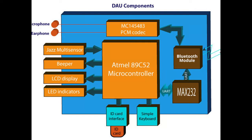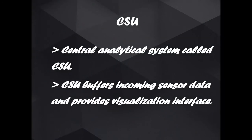The DAU incorporates various hardware modules such as system code, Bluetooth section, EEPROM, beeper, LCD display, LED indicator, voltage level monitors, and batteries. The CSU is the next core unit of Blue-Eye technology and mainly contains a codec and wireless Bluetooth module.